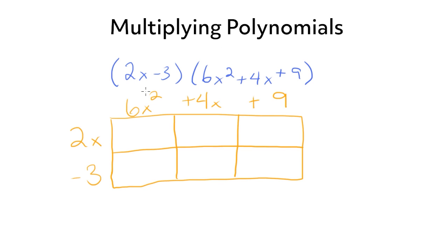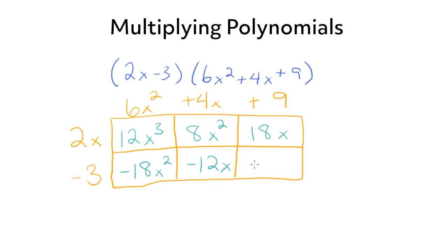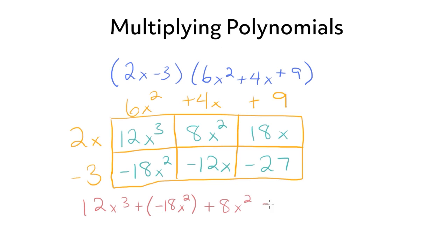Now we multiply each box: 2x times 6x squared is 12x cubed. Negative 3 times 6x squared is negative 18x squared. 2x times 4x is 8x squared. Negative 3 times 4x is negative 12x. 2x times 9 is 18x. And negative 3 times 9 is negative 27. So we add all terms: 12x cubed minus 18x squared plus 8x squared minus 12x plus 18x minus 27.